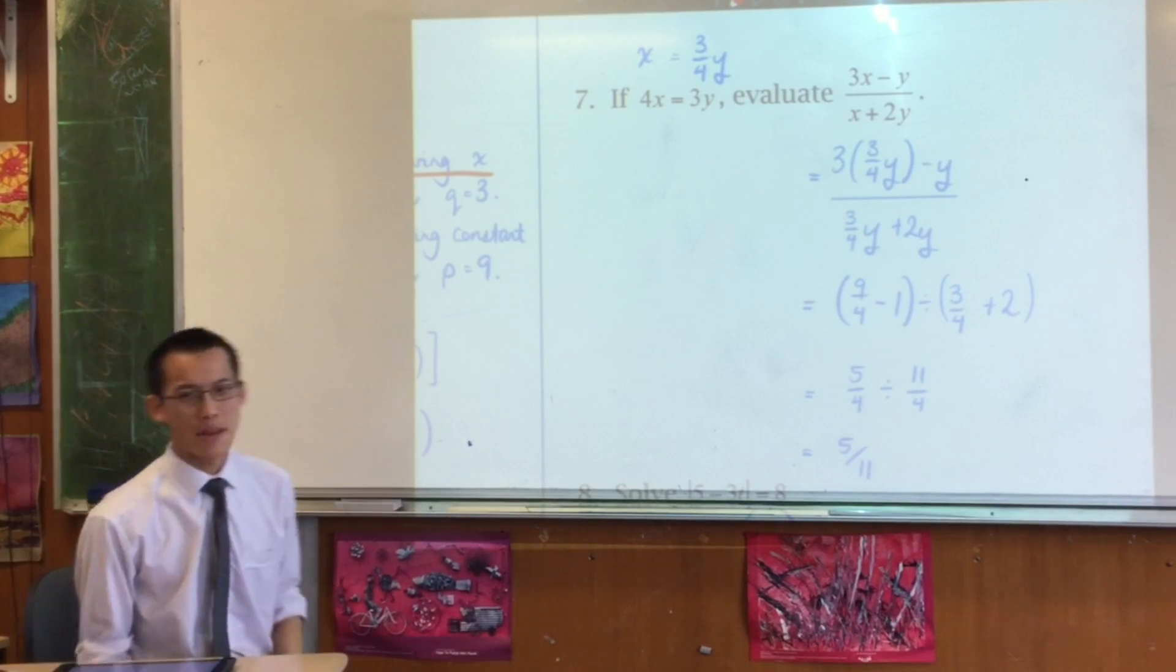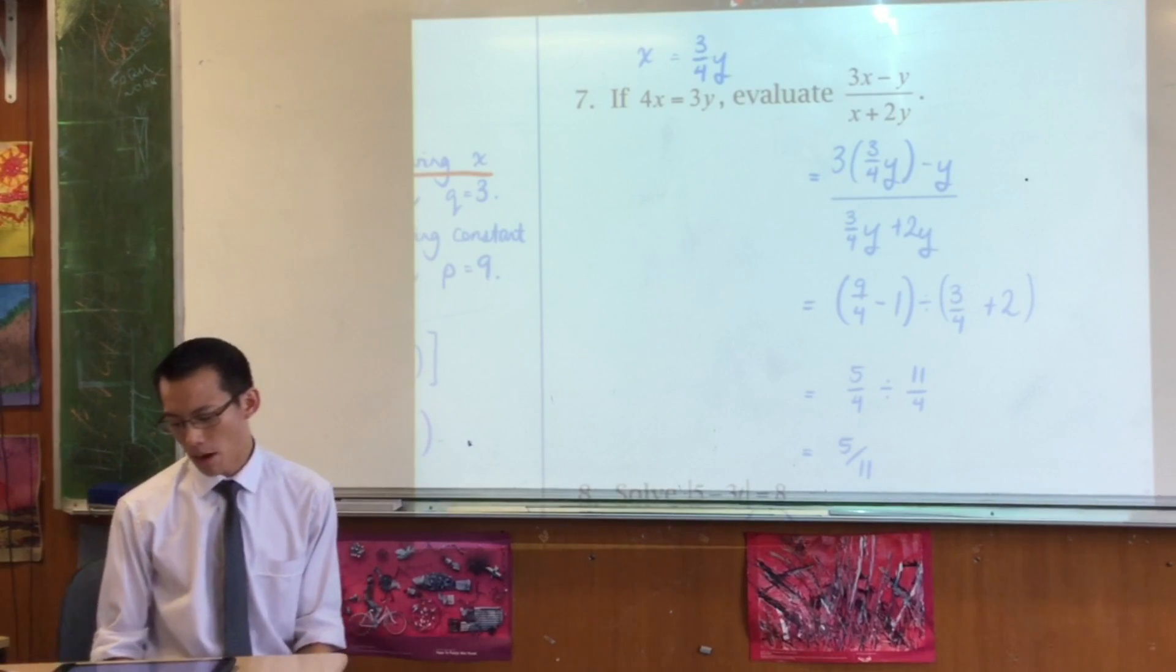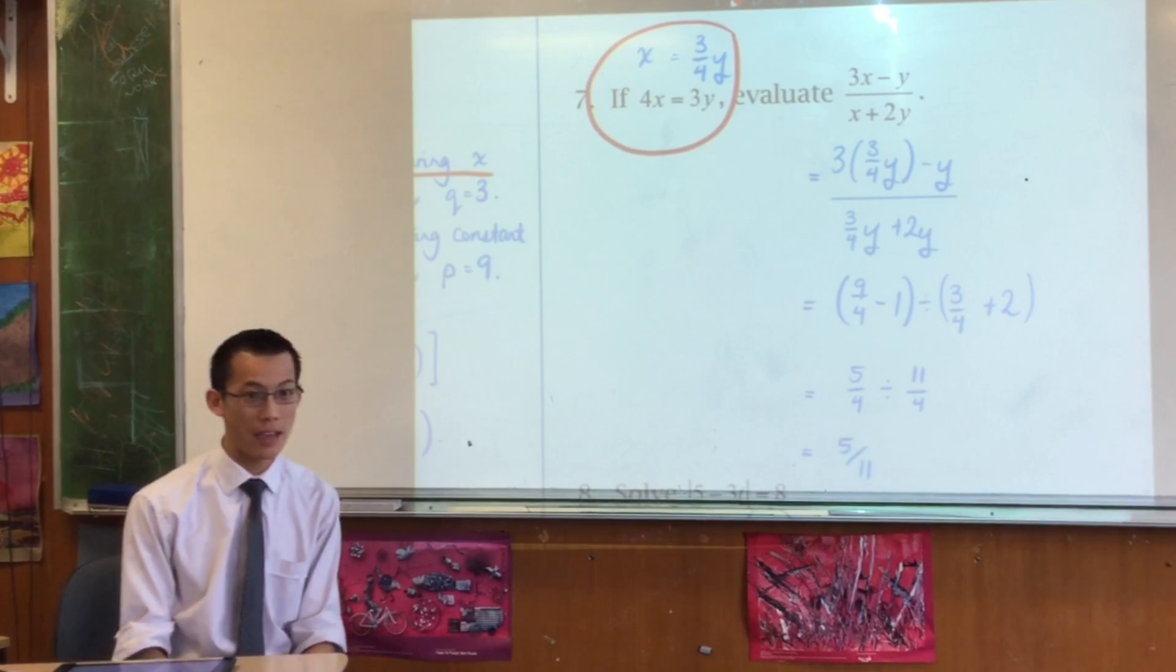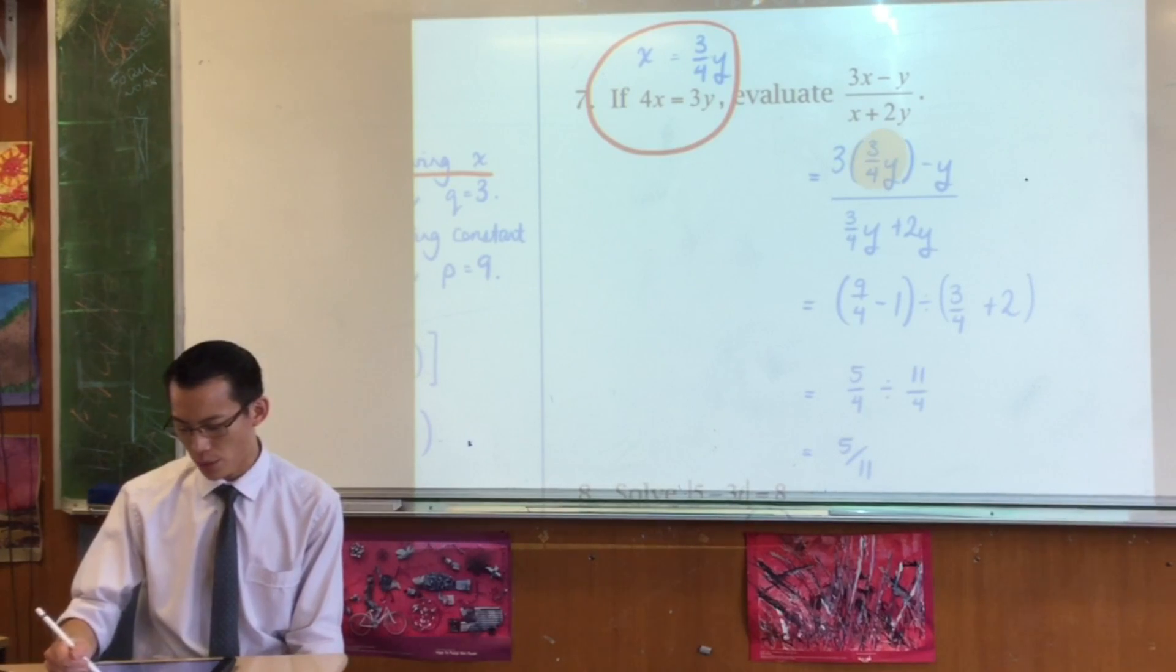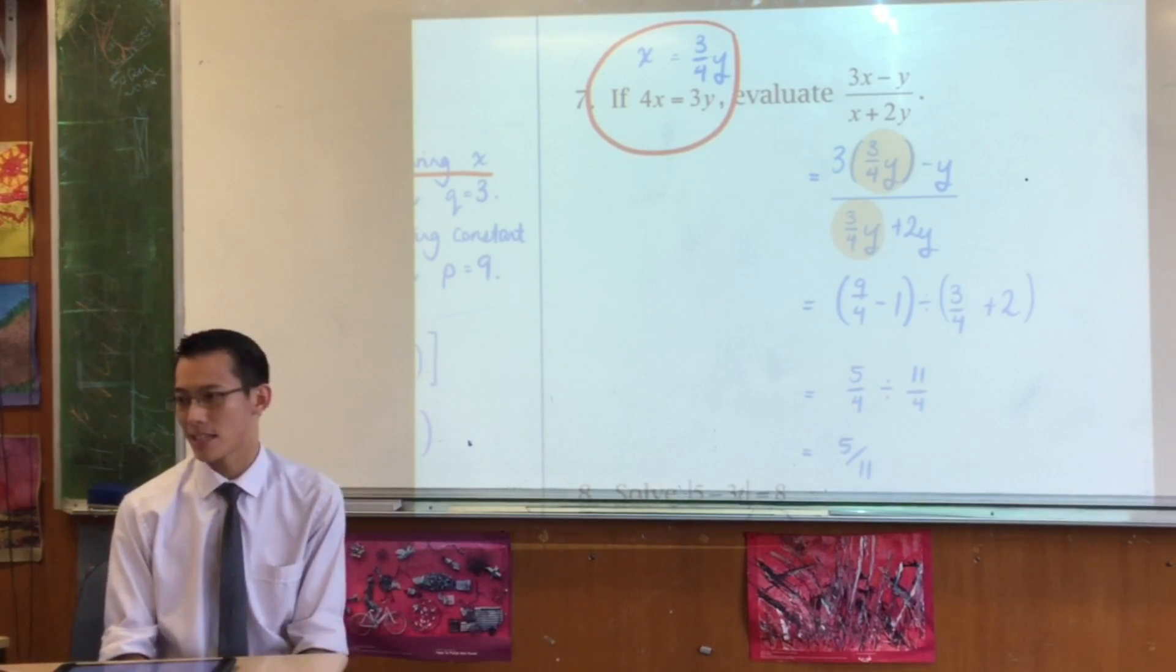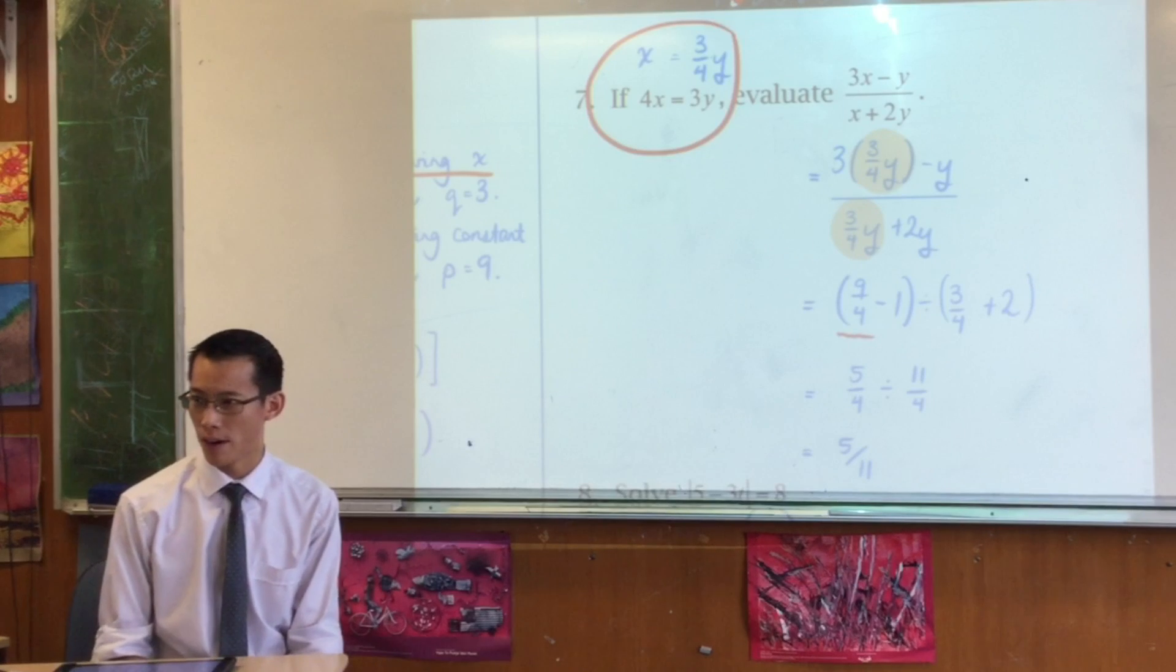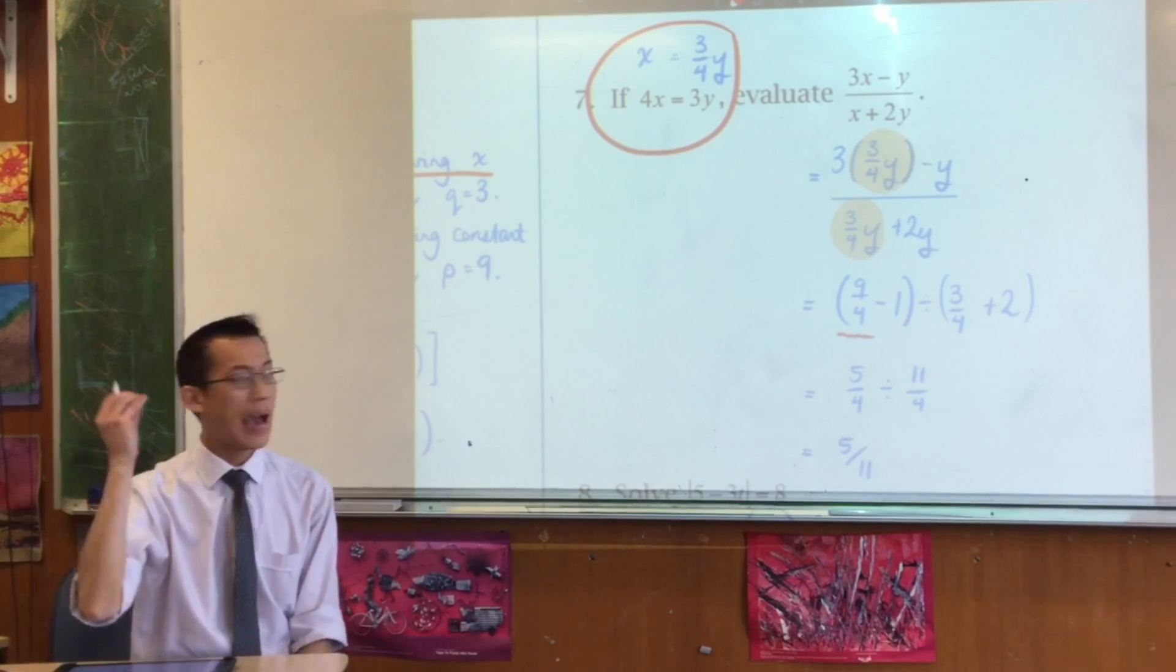So, I don't know how many of you were thrown a little bit when it said evaluate. What do you mean evaluate? Well, once you use this fact over here and substitute it in, can you see where I've got 3 quarters Y, 3 quarters Y? Let me encourage you to do that, by the way. When you're doing a substitution, substitute it as it is. Clearly, there's some simplification that can happen. I turn it into 9 over 4 right there, but I think you're kind of asking for it if you do that simplification at the same time as your substitution.